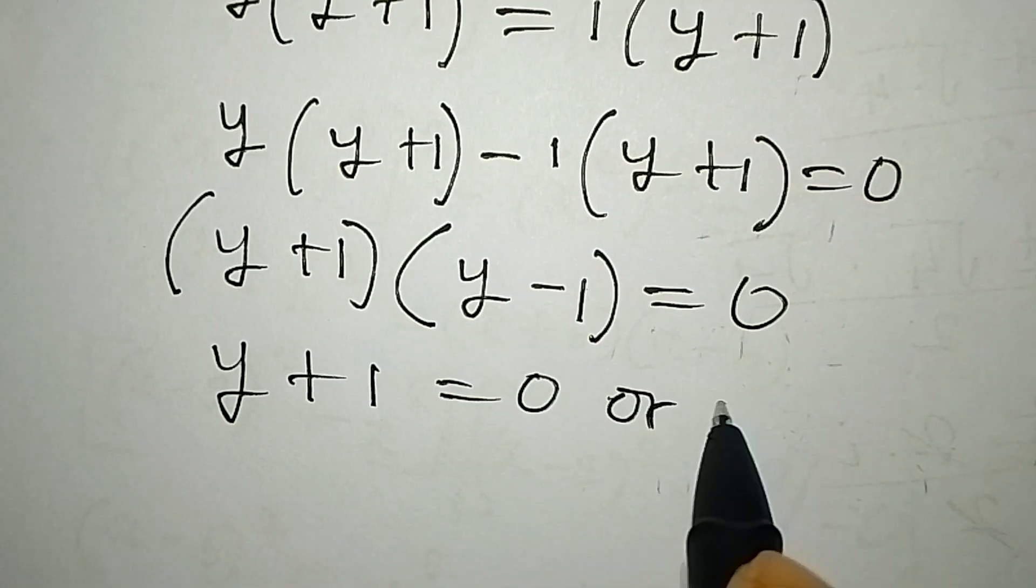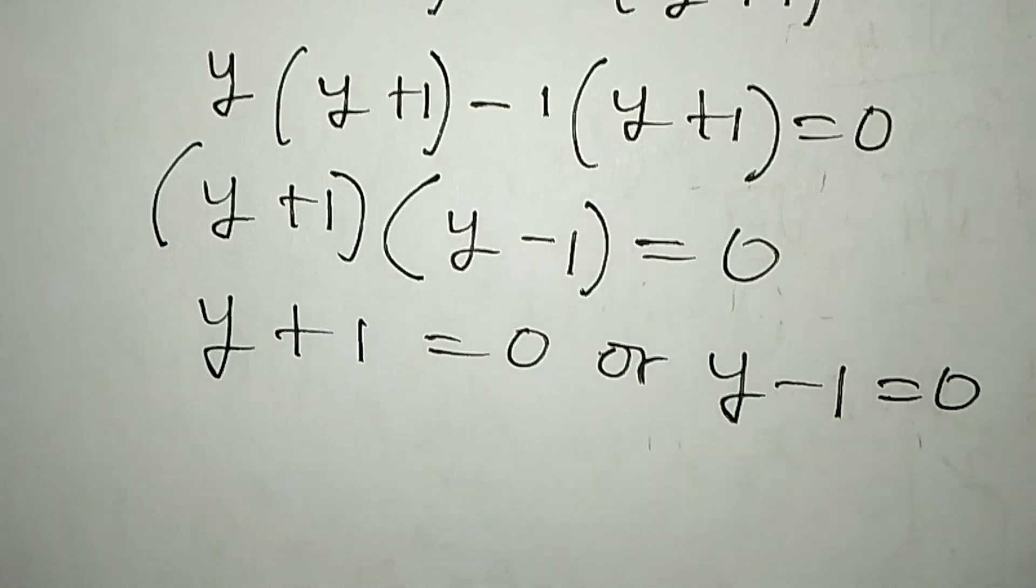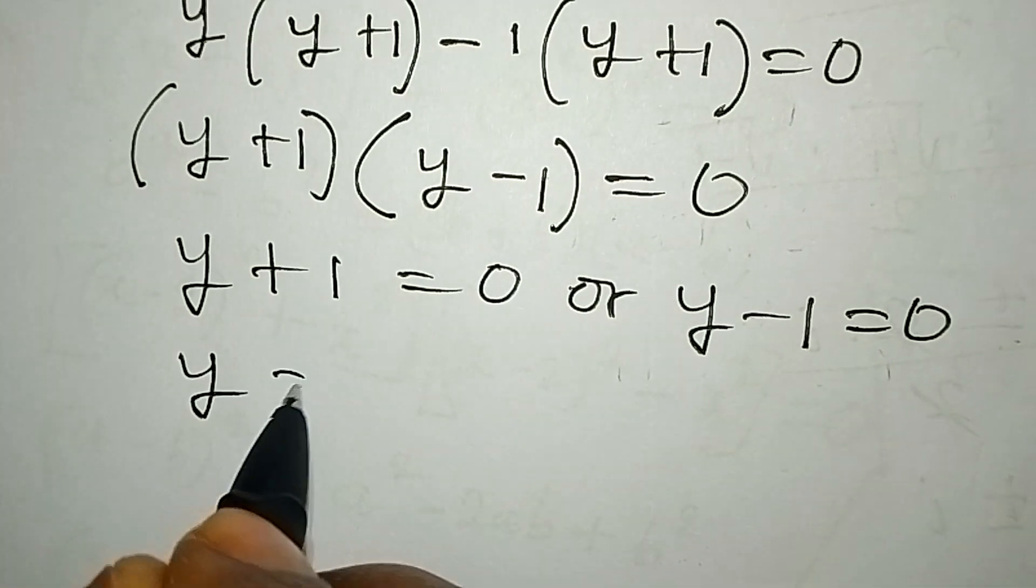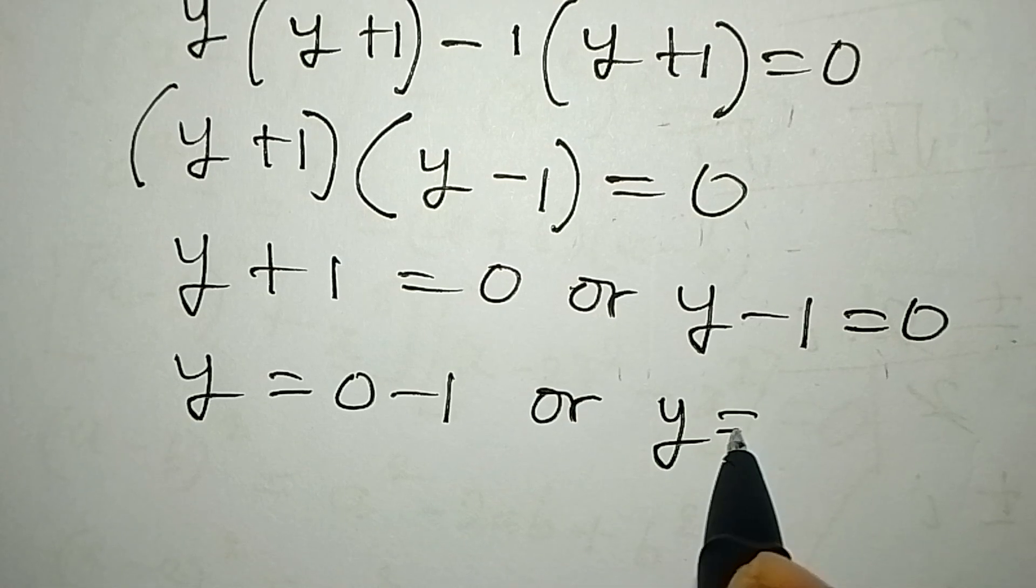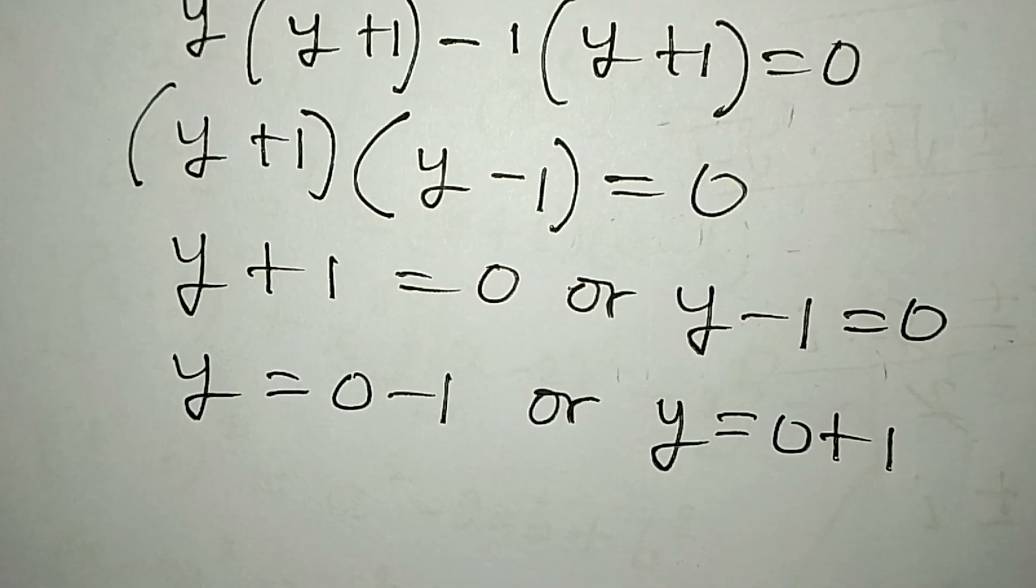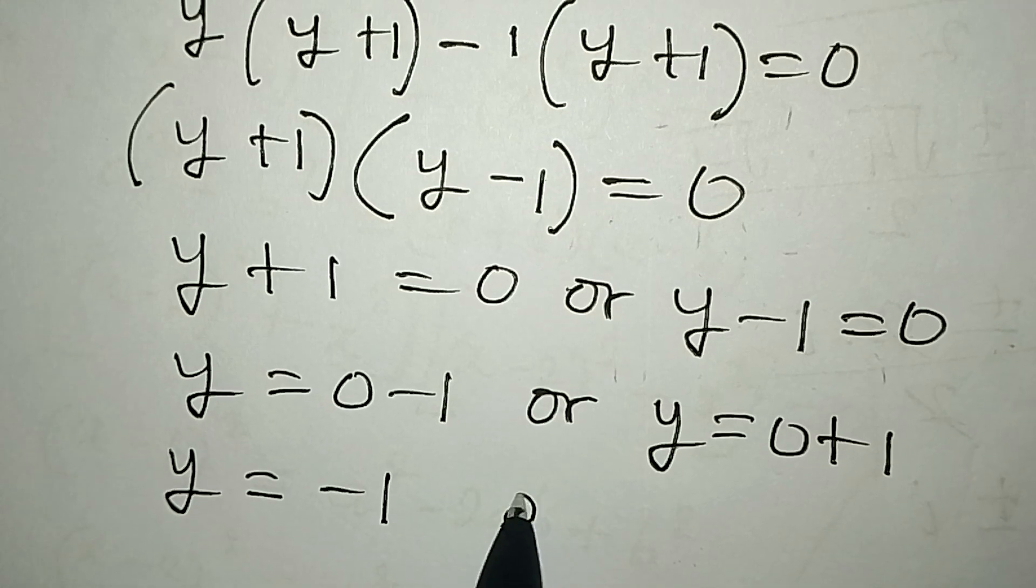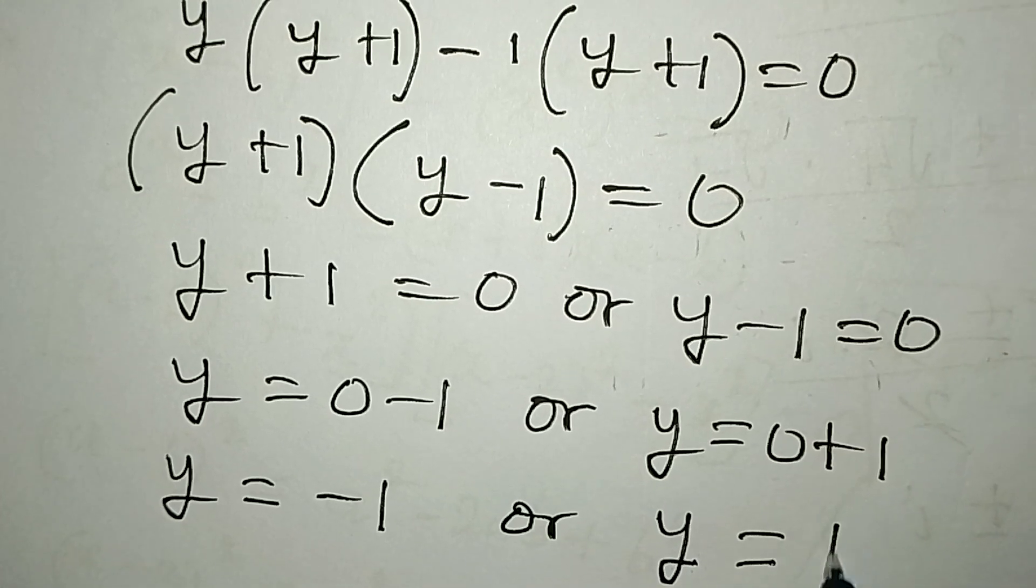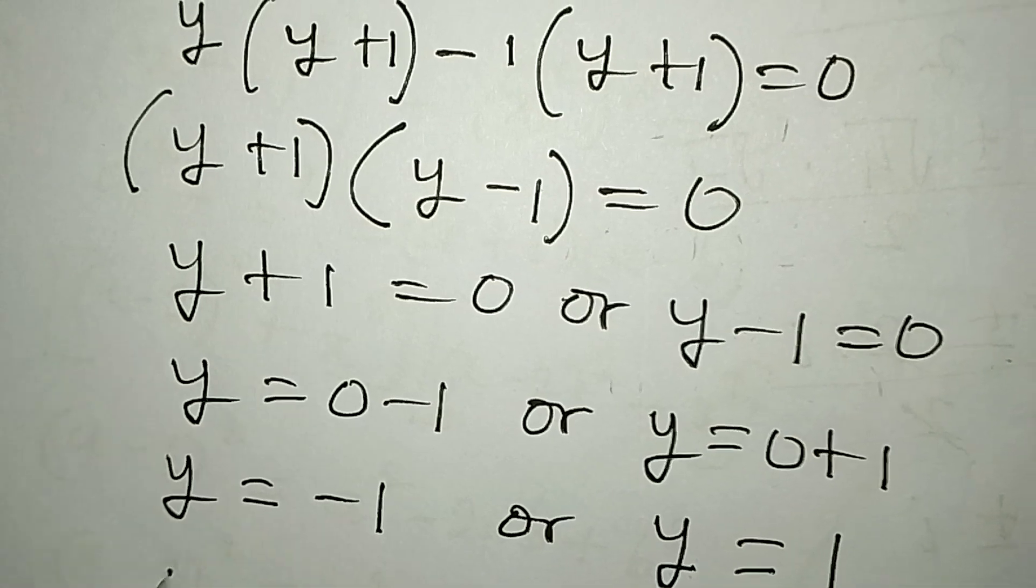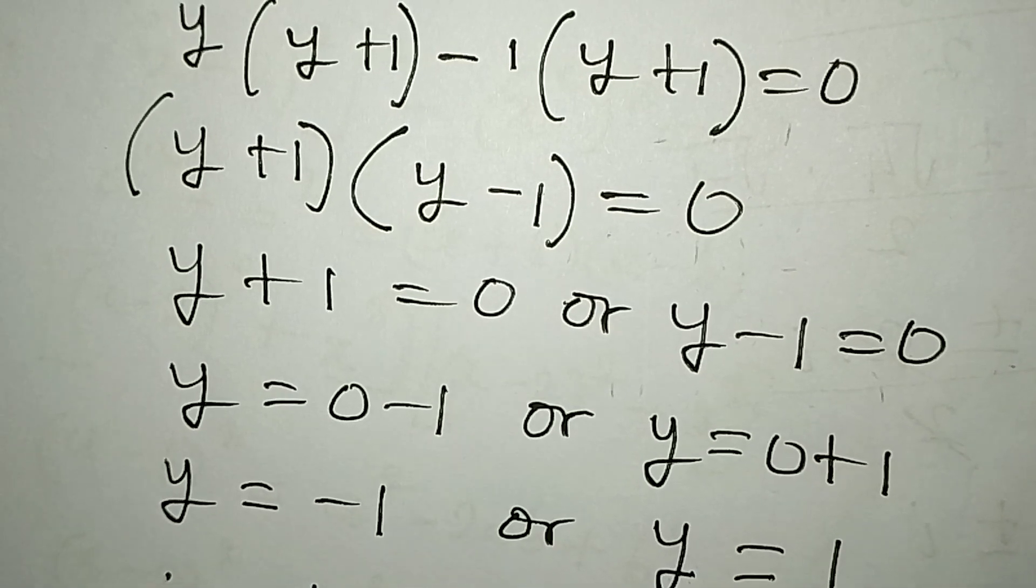So y equals zero minus one, or y equals zero plus one, meaning y equals negative one or y equals one. Therefore, y is equal to negative one or one.